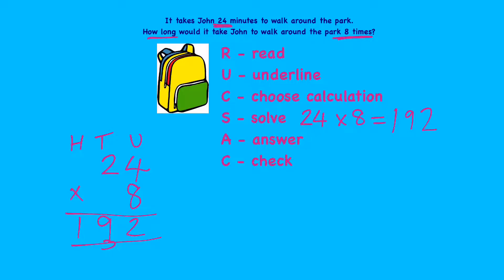A is for Answer — is my answer sensible? Well, if I do a rough estimation, 24 is close to 20, and 20 times 8 is 160, which is close enough to 192. So it's probably a sensible answer. Now I need to Check.